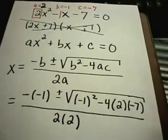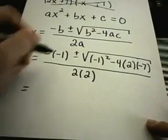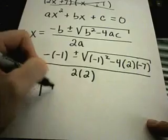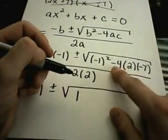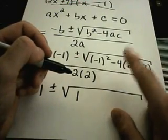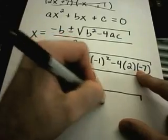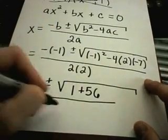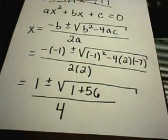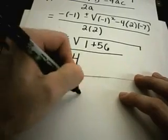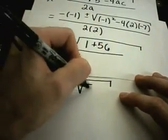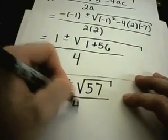So now I have to simplify all of this stuff down. So negative negative 1 is positive 1, plus or minus the square root. Underneath, I'm going to get a 1. Then I have negative 4 times 2, that's negative 8. Negative 8 times negative 7 is positive 56 over 2 times 2, which is 4. And from here, I just keep simplifying. So it says I'm going to get 1 plus or minus the square root of 1 plus 56, which is 57, over 4.